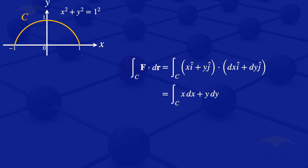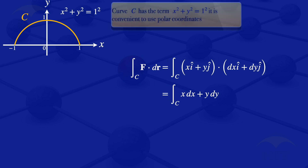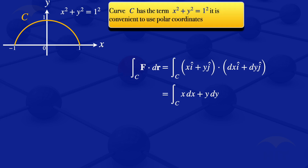Now looking at that integral along C, it has terms which involve x and y that relate to x-squared plus y-squared. When we have such terms, it is convenient to use polar coordinates.